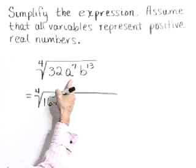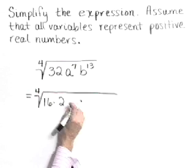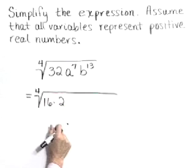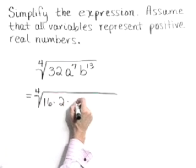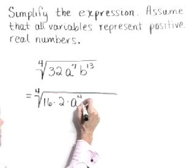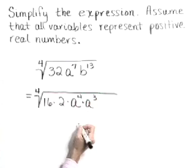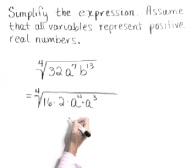Let's rewrite a to the seventh as well, splitting it into pieces, one of which we can take the fourth root of. So let's write that a to the seventh as a to the fourth times a to the third. We can take the fourth root of a to the fourth.